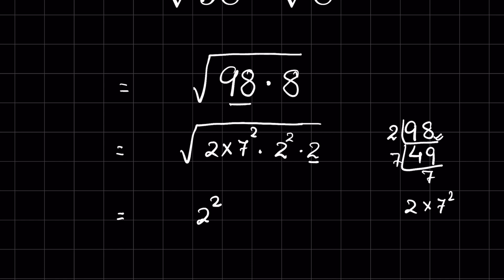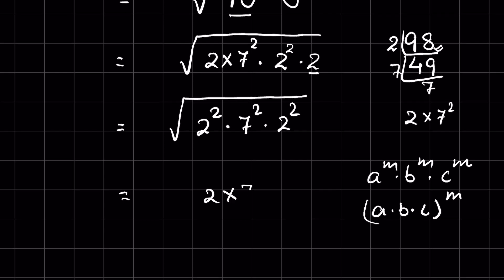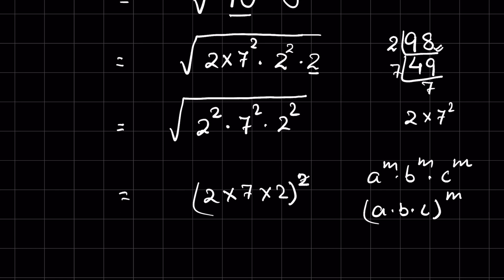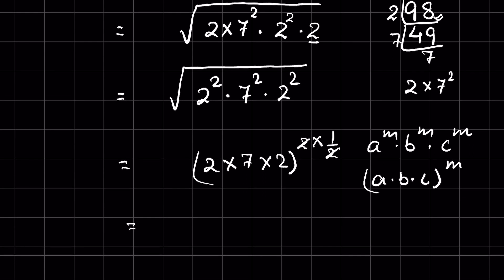So we now have 2 squared times 7 squared times 2 squared, all under square root. Using the rule that a to the m times b to the m times c to the m equals (a times b times c) to the m, we can write this as (2 times 7 times 2) whole squared, under square root. The square root means raised to the power 1/2, so multiplying the exponent 2 by 1/2 cancels out, giving the answer 28.